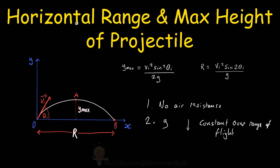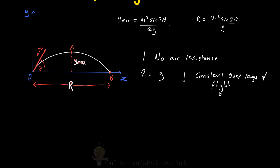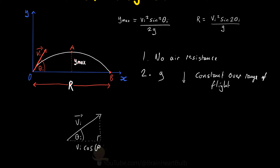If we have a closer look at our projectile's velocity vector, the velocity vector can be separated into its x and y component vectors. These component vectors can be studied in isolation from one another. Looking at the x or horizontal component first, from trigonometry we know that the x component of the vi vector is equal to vi cosine theta, which gives us the velocity of the vector along the x-axis.